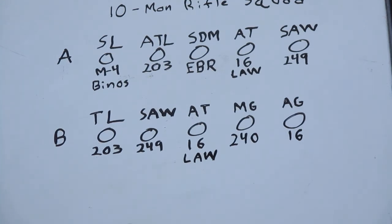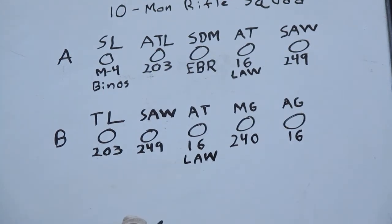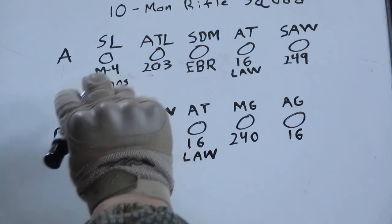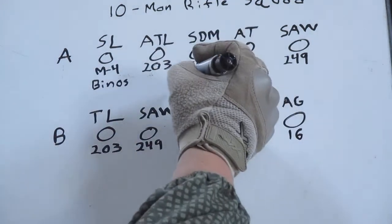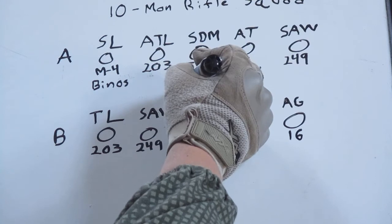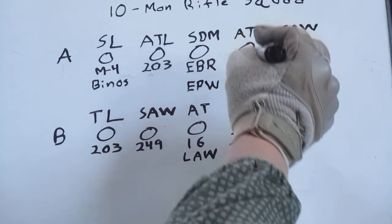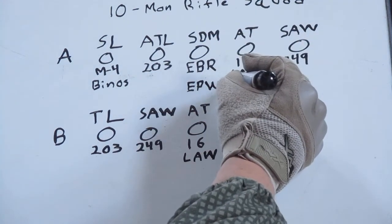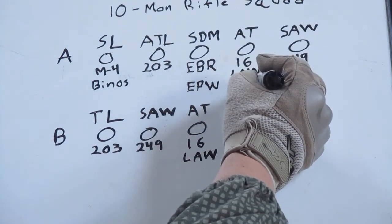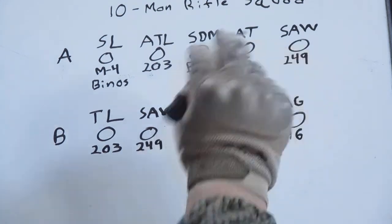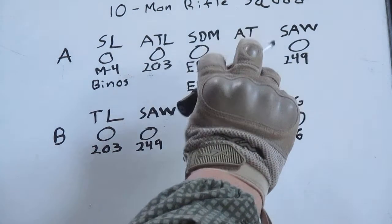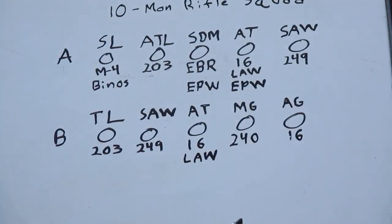Additional assignments that you will see - in your Alpha team, you will need an EPW team, an enemy prisoner of war team. The people that should be on that, because of the weapons, should be your squad designated rifleman and your AT gunner. Your saw gunner is going to be carrying too much ammo in order to be able to operate effectively on your EPW team.